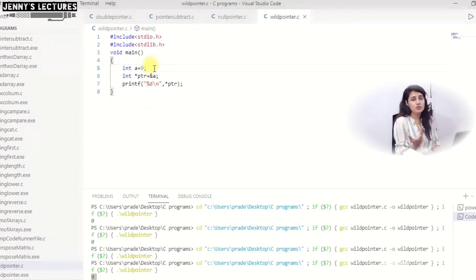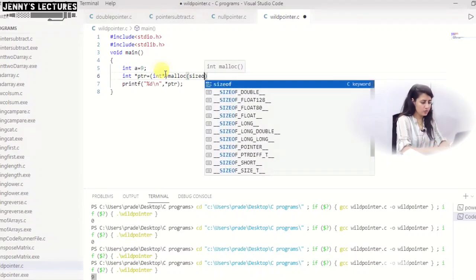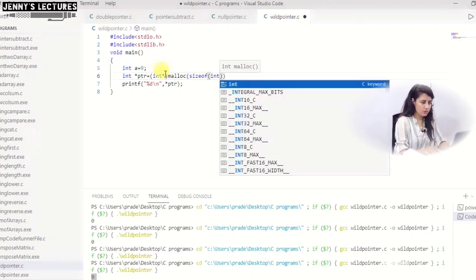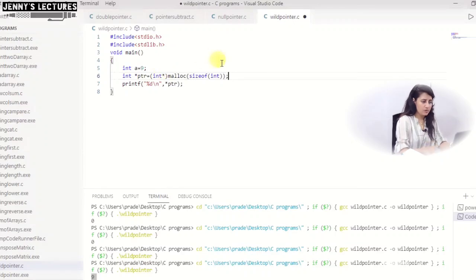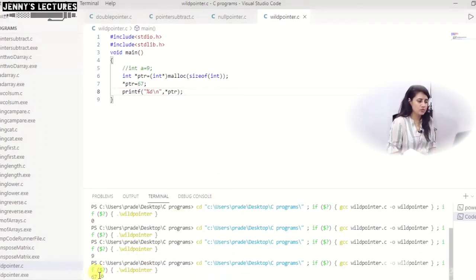Or using malloc function also you can do this thing, like you can do int, this is type casting. We are type casting the pointer because malloc is going to return void pointer and we want int. Size of int here. So here directly asterisk ptr, I am storing 67 suppose. I am not taking any variable, and I am now dereferencing this pointer. So it should give you 67. See it is printing 67. So now these pointers are not wild pointer.